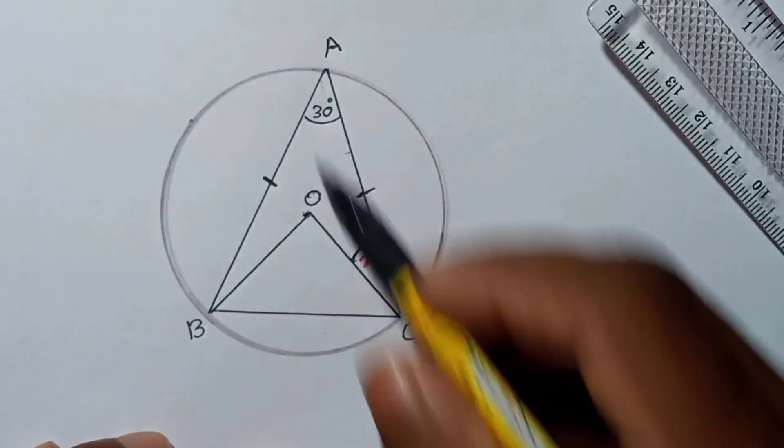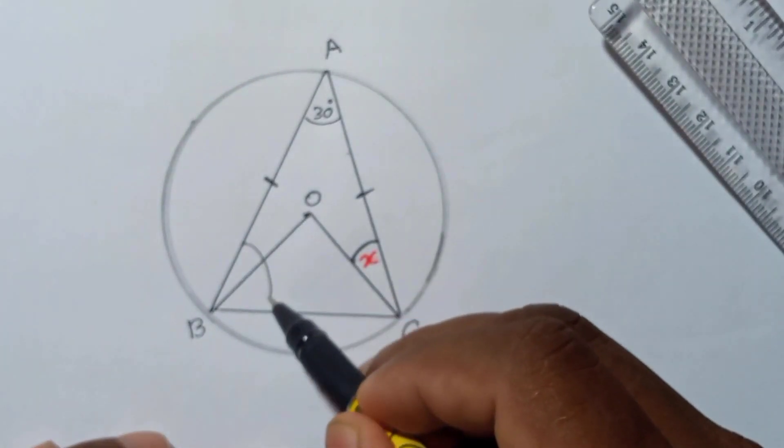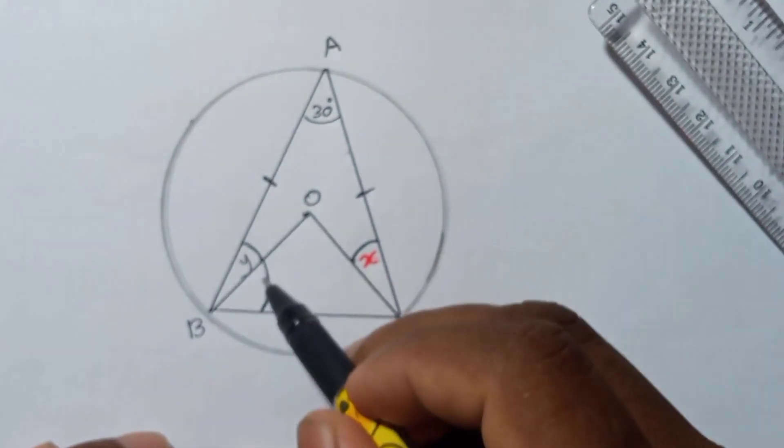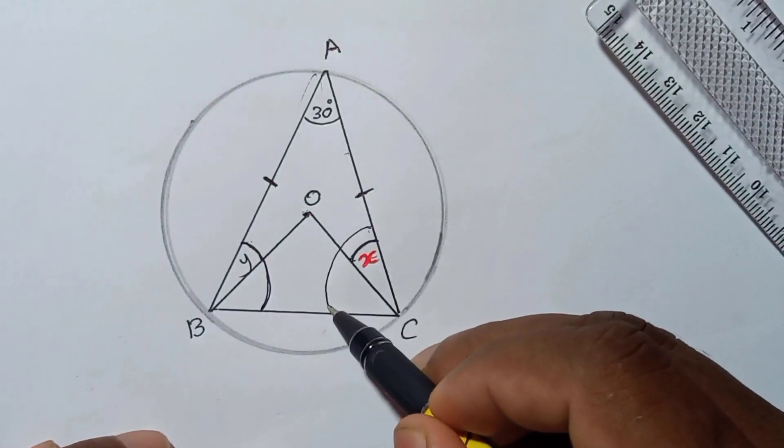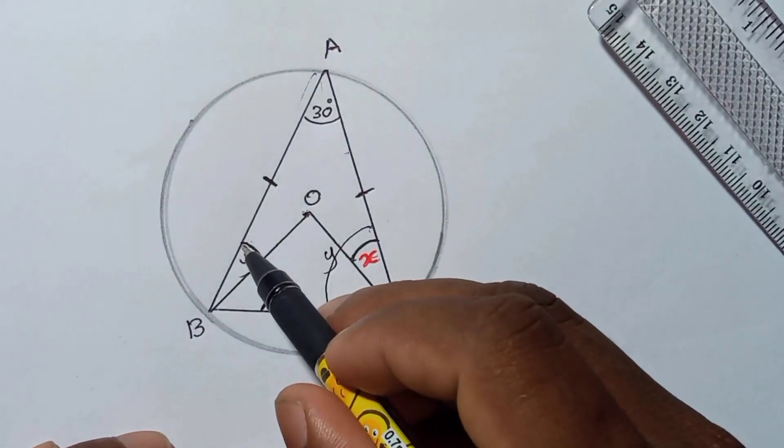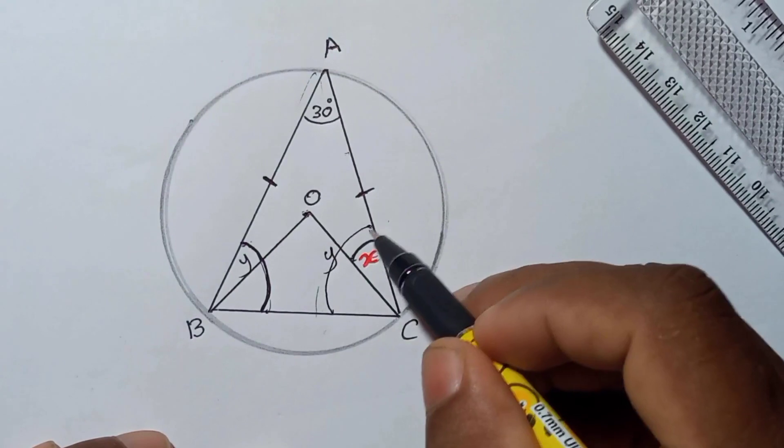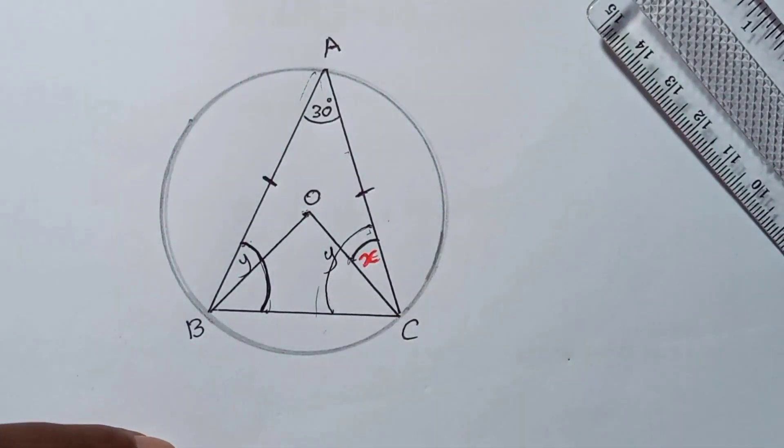Now we have AB and AC equal. This side and this side are equal, so this side's opposite angle is this one. I will name this as y, and this side's opposite angle is this, that is also y. That means this angle and this one, both together, are equal. Both are y, and they are equal.